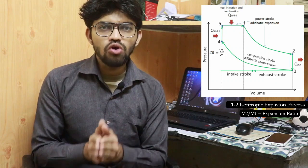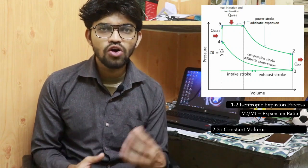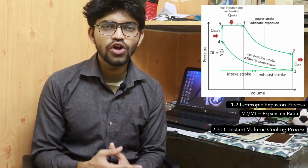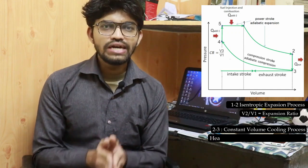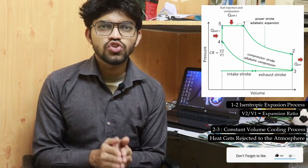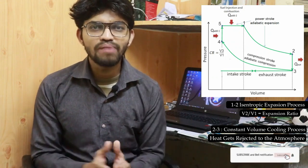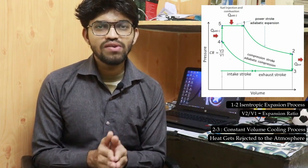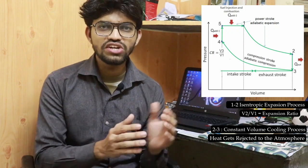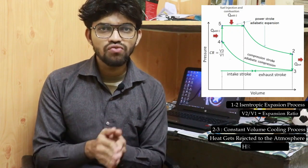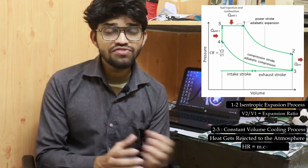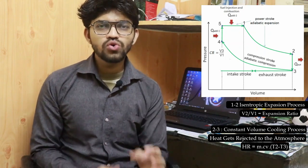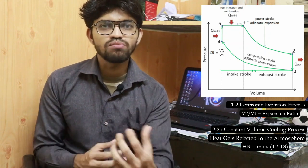After the isentropic expansion, process 2 to 3 is the constant volume heat rejection, also called constant volume cooling. During this exhaust stroke, heat gets rejected towards the atmosphere. The total heat rejected can be calculated using the formula: Q_rejected = m × Cv × (T2 − T3), where m is the mass of air in the engine cylinder and Cv is the specific heat at constant volume.